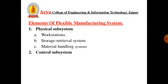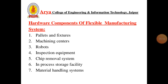Second is Storage Retrieval System, which acts as a buffer during work-in-process and holds devices such as carousels used to store parts temporarily between work stations or operations. Third is Material Handling System, which consists of power vehicles and various types of automated material handling equipment such as conveyors, automated guided vehicles, in-floor carts, and robots used to transport work parts and sub-assemblies to the processing work stations. Other components of FMS include pallets and fixtures, machining centers, robots, inspection equipment, chip removal system, in-process storage facility, and material handling system.